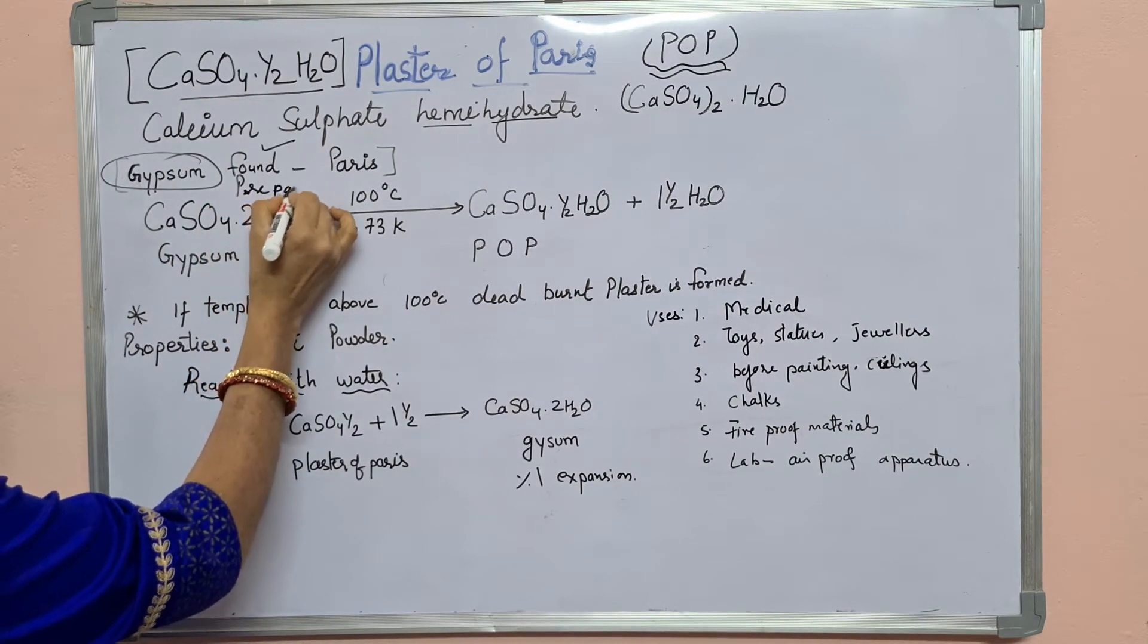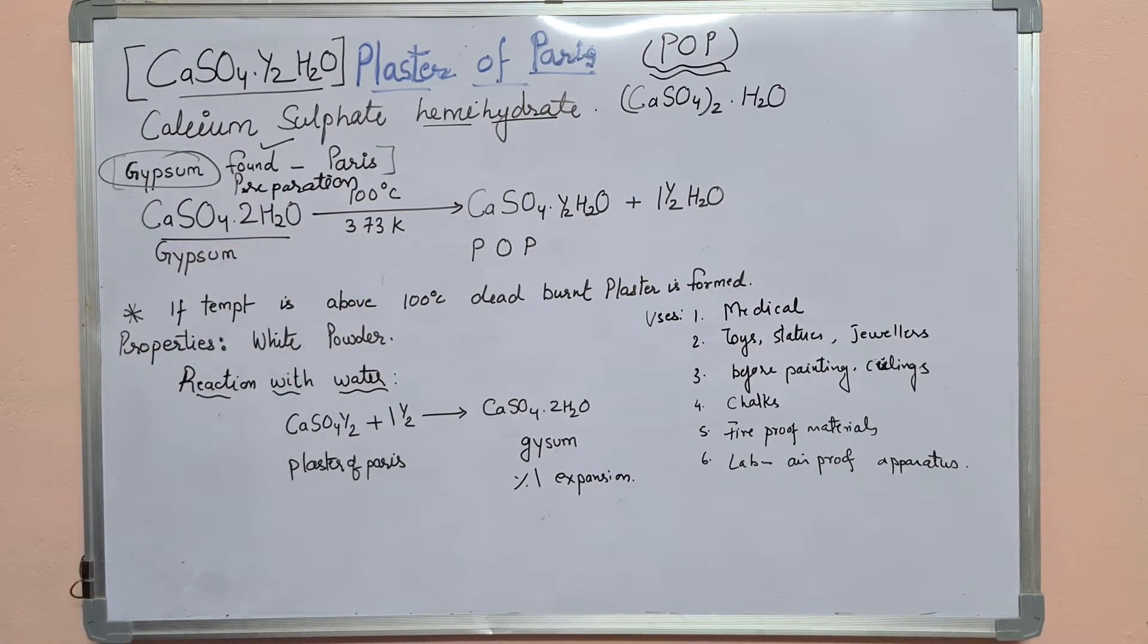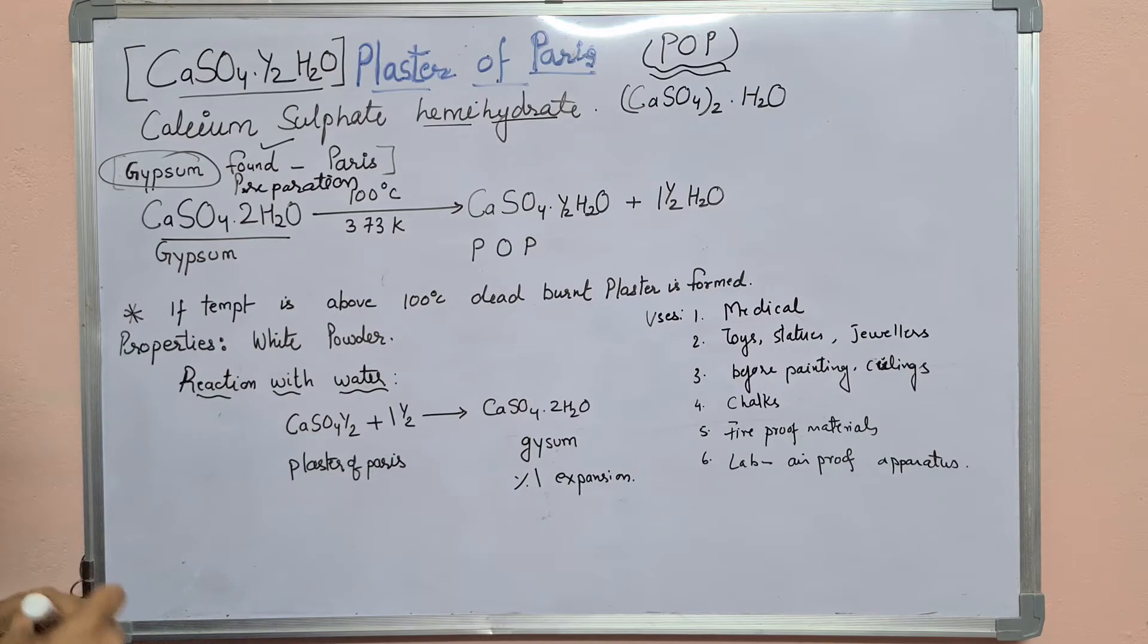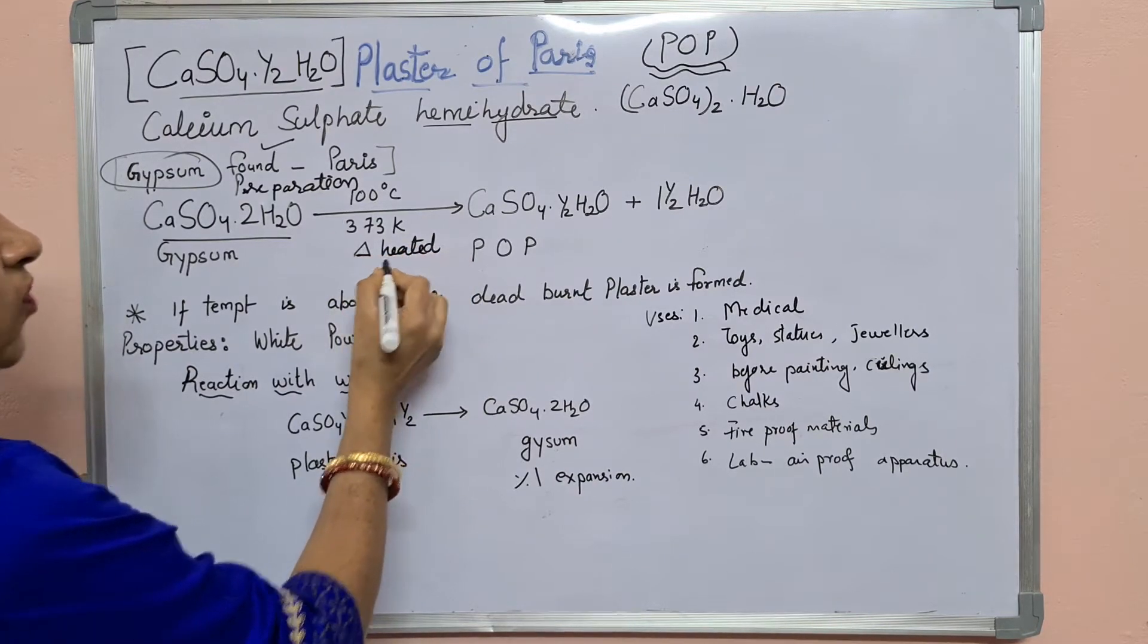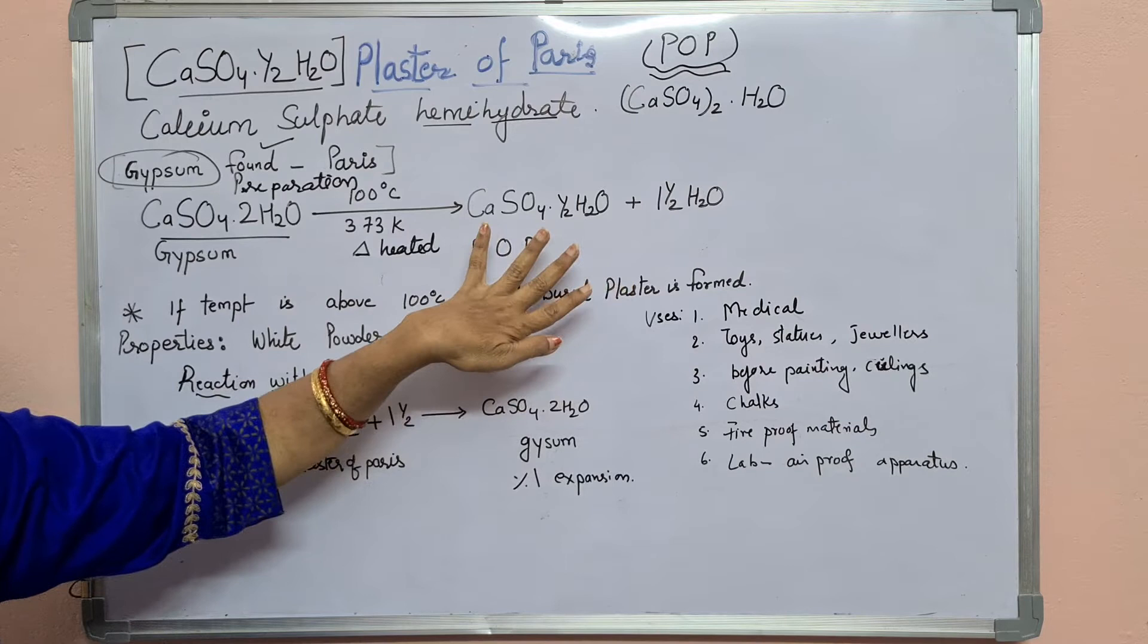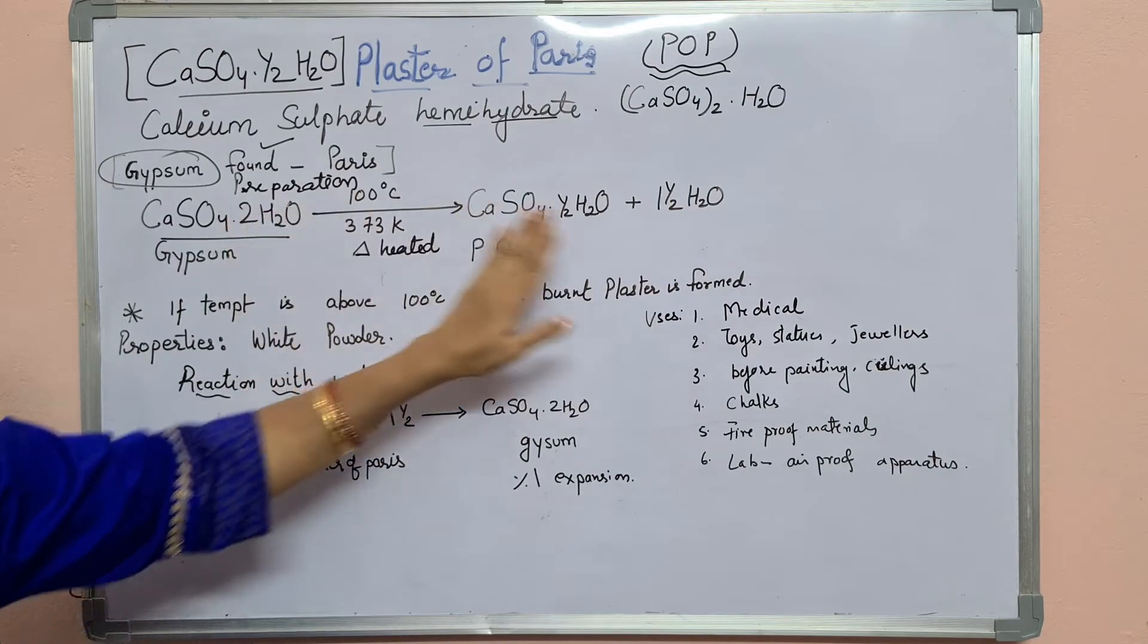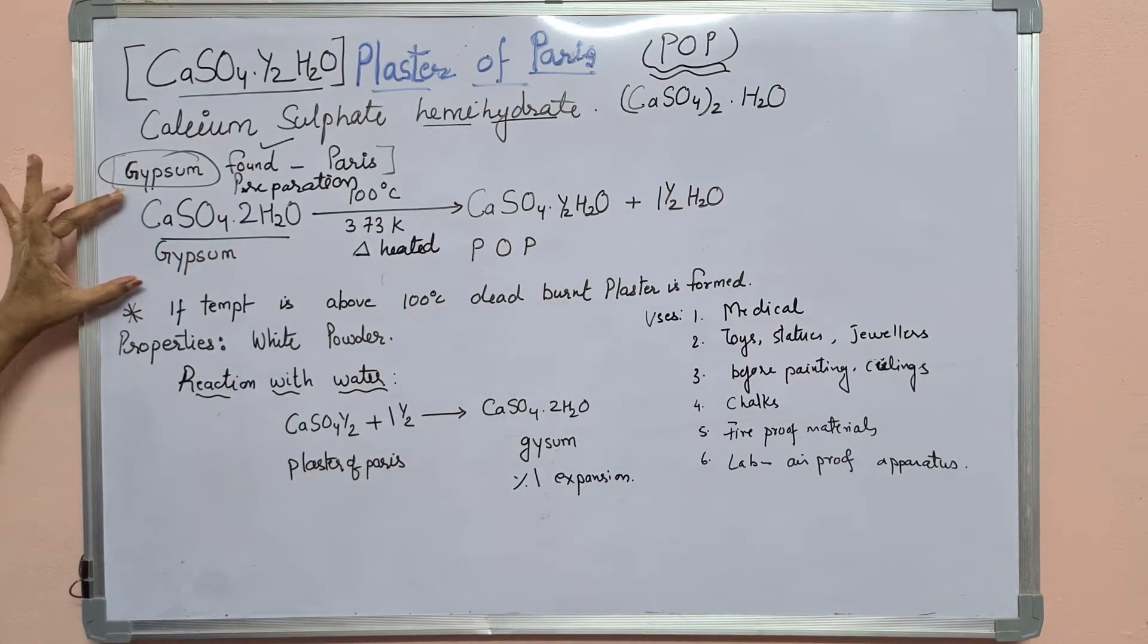Now let's see the reaction for the preparation of POP. Take gypsum, CaSO4·2H2O, heated up to 100°C or 373 Kelvin. It gives you POP, that is CaSO4·½H2O, calcium sulfate hemihydrate, plus leftover water - one and a half water molecules to balance the reaction. This is the reaction for the preparation of Plaster of Paris.